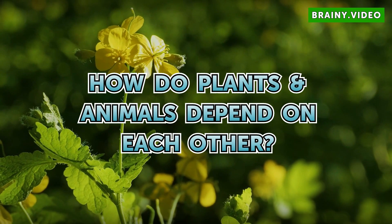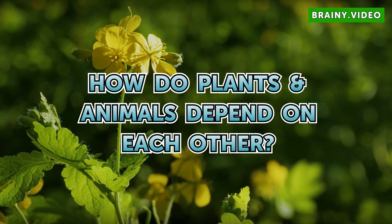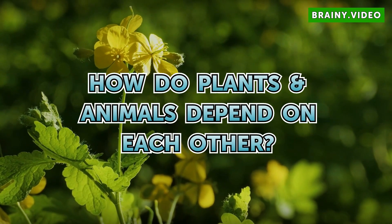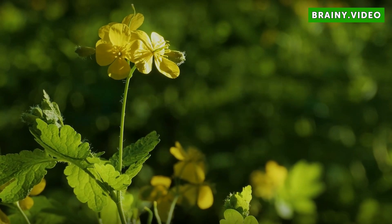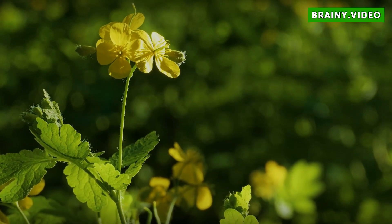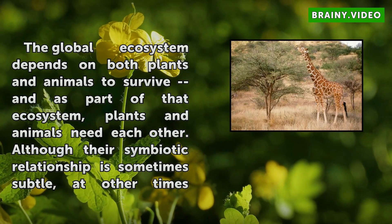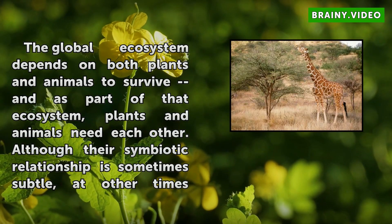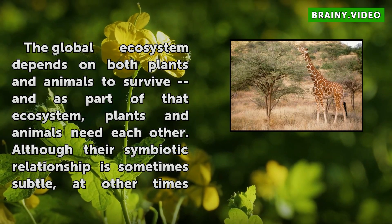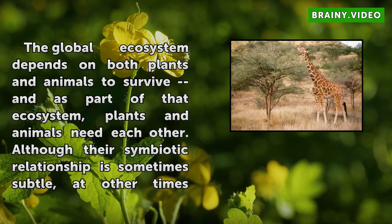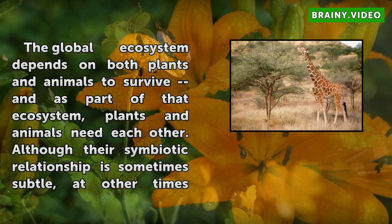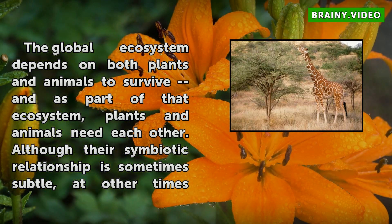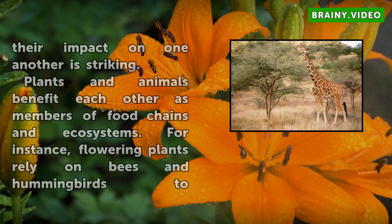How do plants and animals depend on each other? The global ecosystem depends on both plants and animals to survive, and as part of that ecosystem, plants and animals need each other. Although their symbiotic relationship is sometimes subtle, at other times their impact on one another is striking.